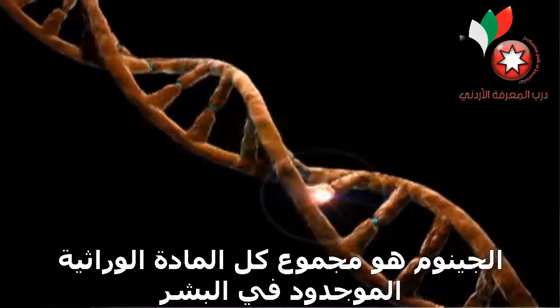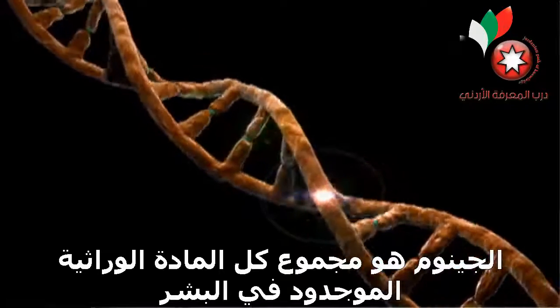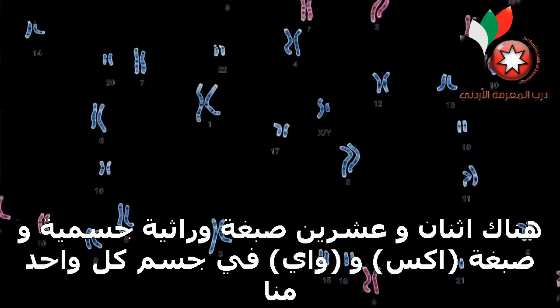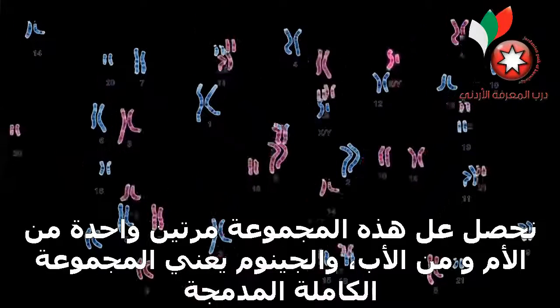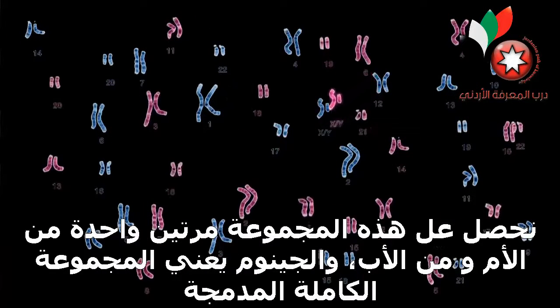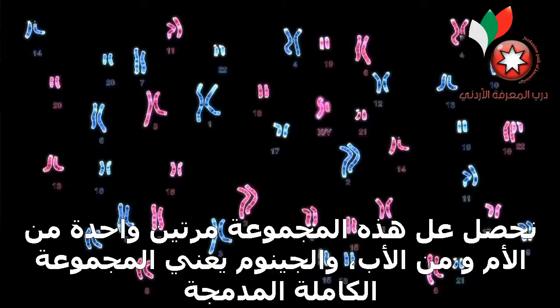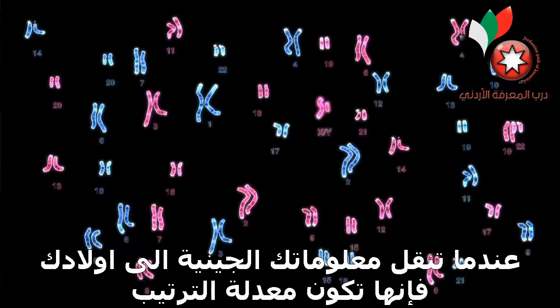Genomes are just the collection of all the DNA in a human. There are 22 autosomes and an X or a Y in each of us, and we get that set twice — one from mother, one from father. The genome refers to one complete set of those.